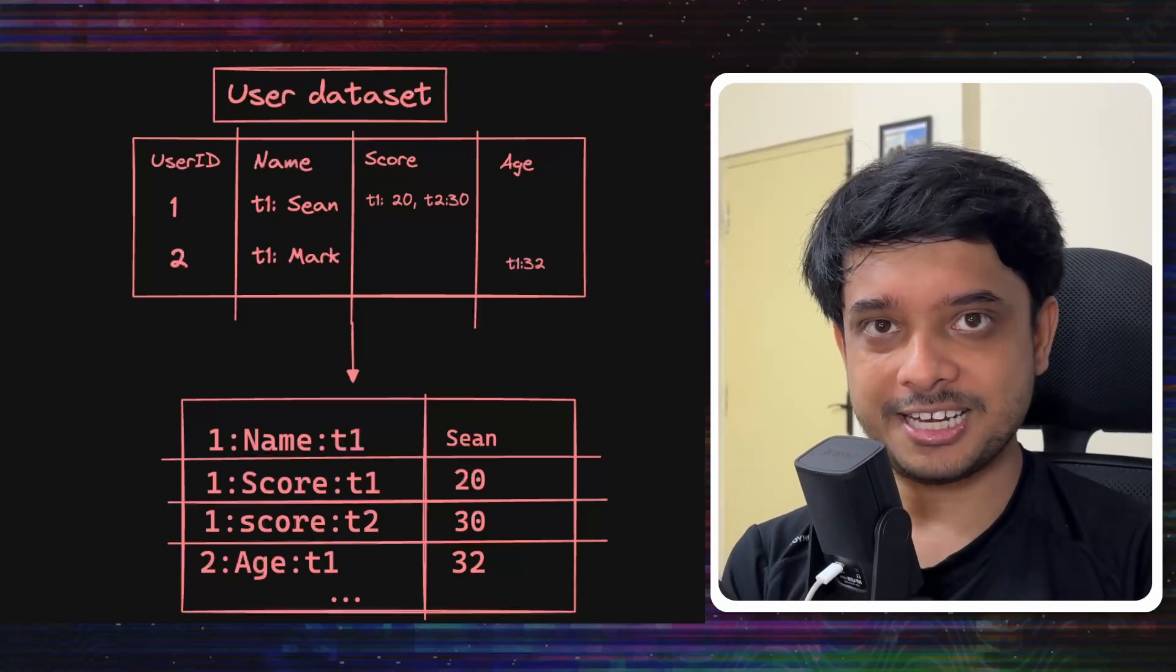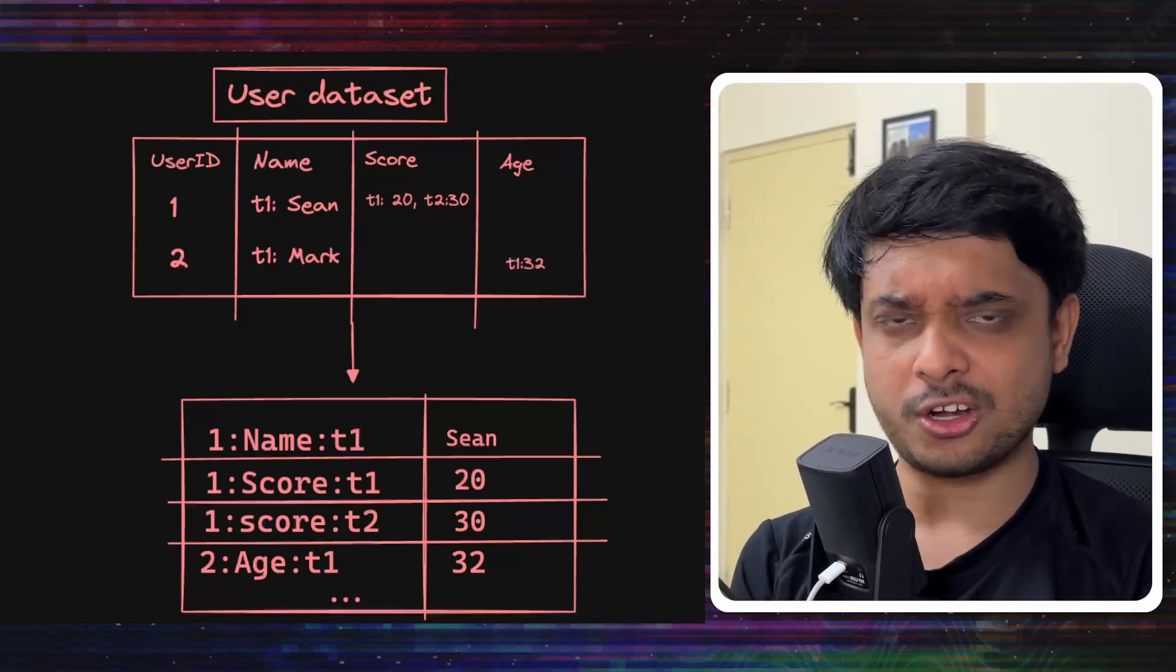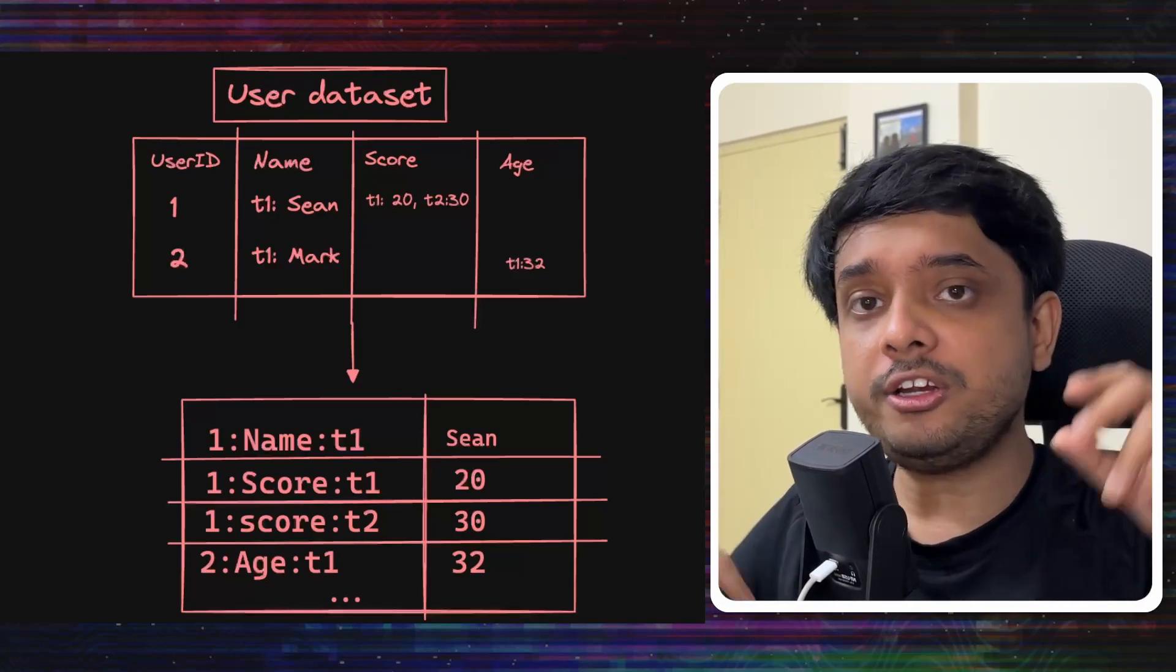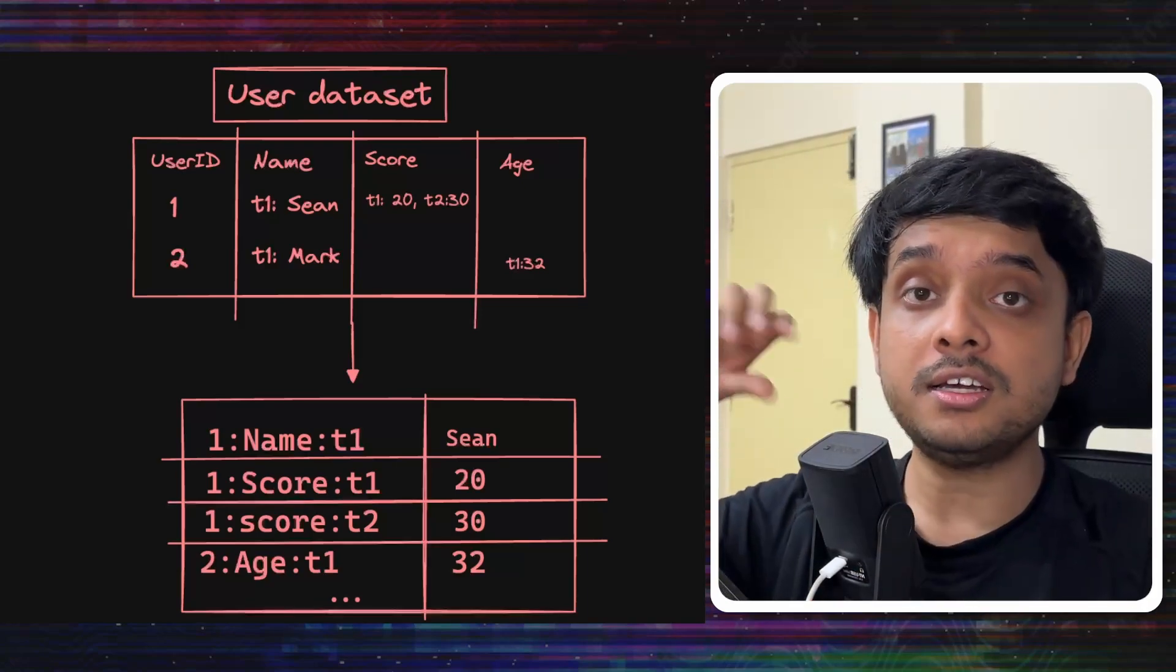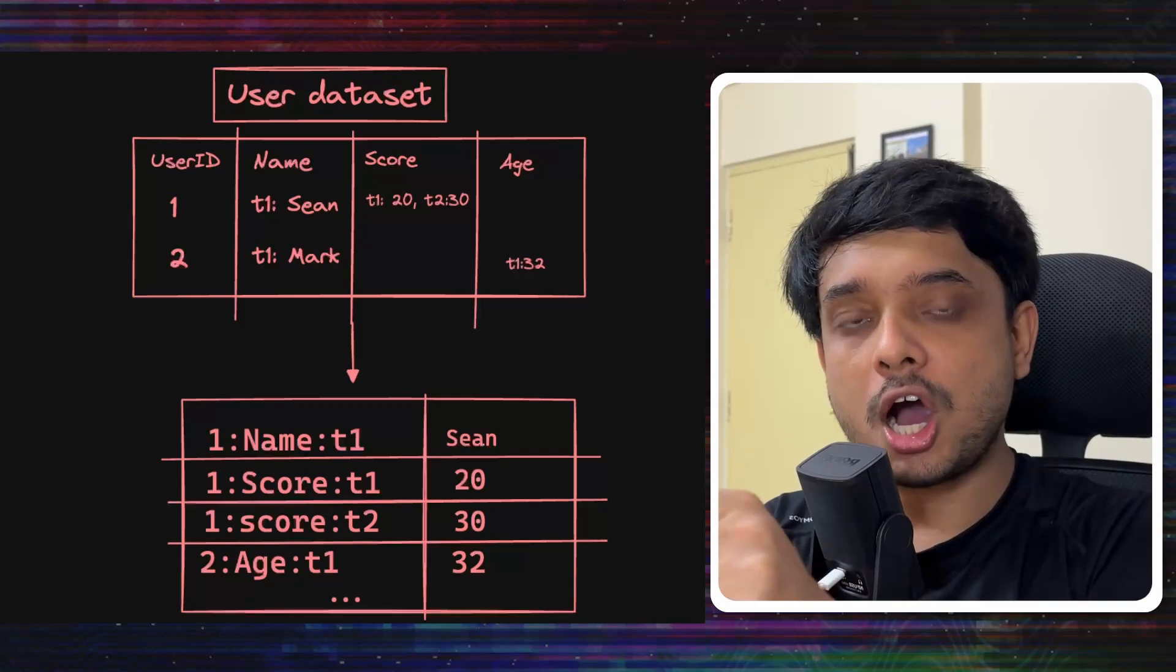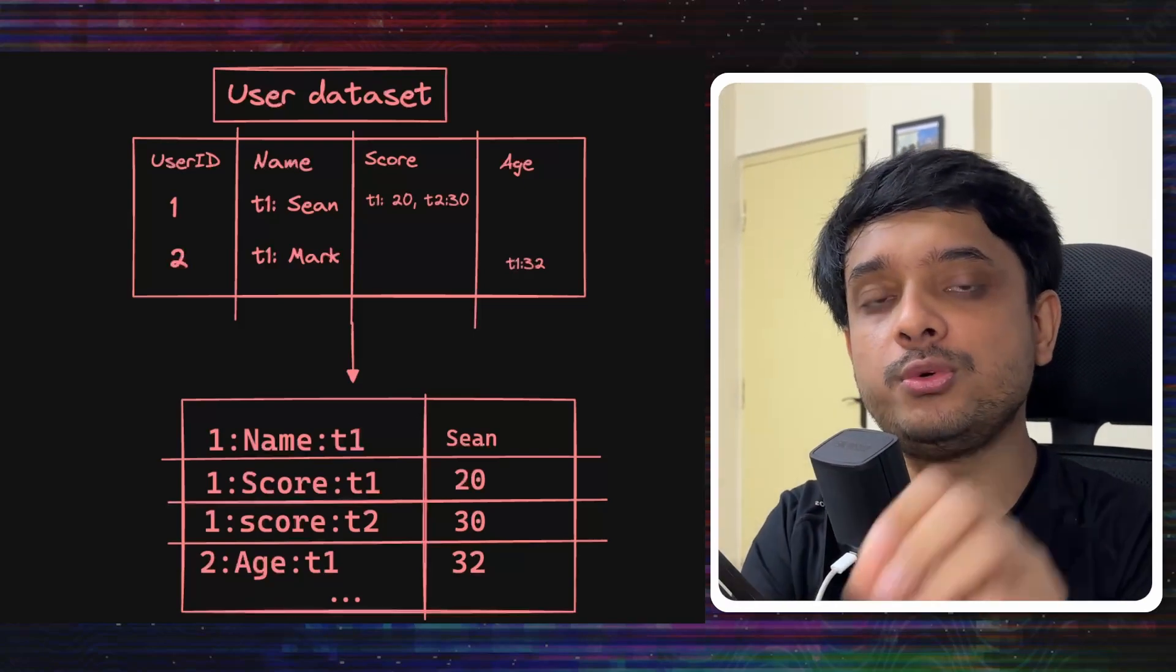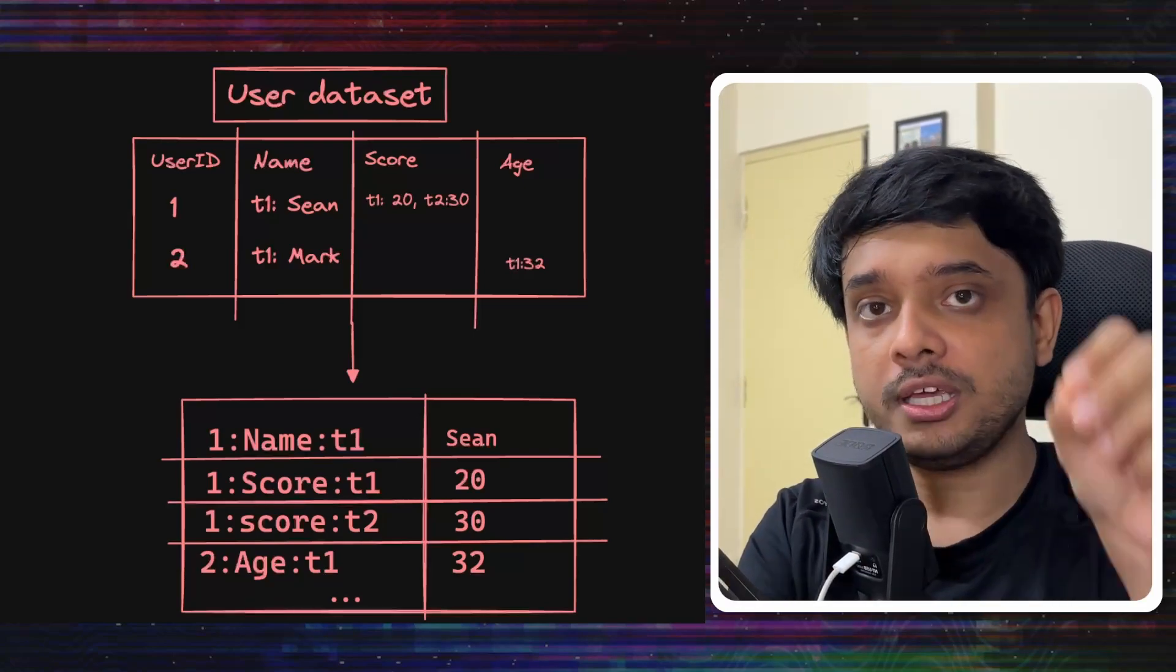So if this is the wide column dataset called user and you can see the data and the columns it has, we will need to create a key to store each of these values, each of these cells in the key value database RocksDB. Now how will we create those keys to uniquely identify a value in the key value database.